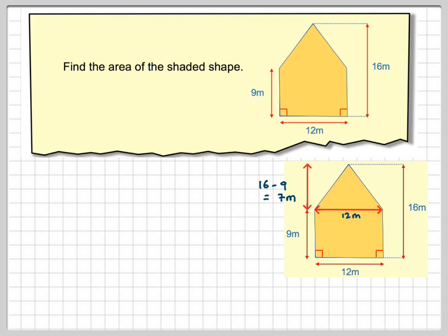Now we can find the area of the whole shape by first finding the area of the triangle and secondly finding the area of the rectangle and adding them together.